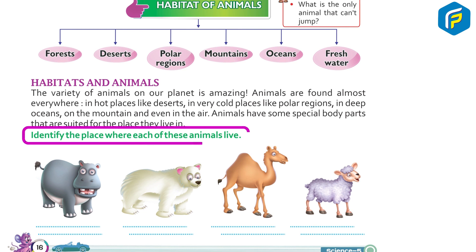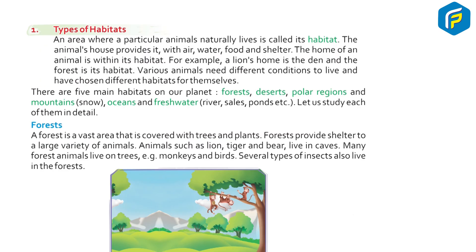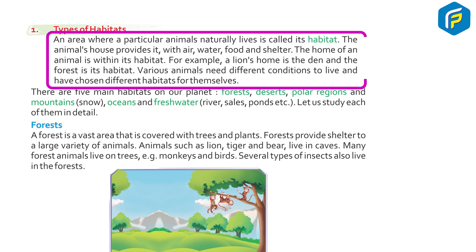Identify the place where each of these animals lives. An area where a particular animal naturally lives is called its habitat. The animal's habitat provides it with air, water, food, and shelter. The home of an animal is within its habitat. For example, a lion's home is a den and the forest is its habitat. Various animals need different conditions to live and have chosen different habitats for themselves.